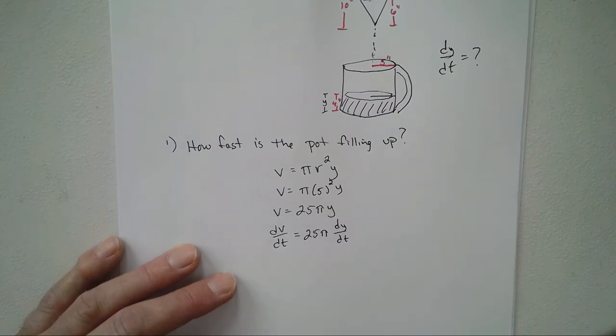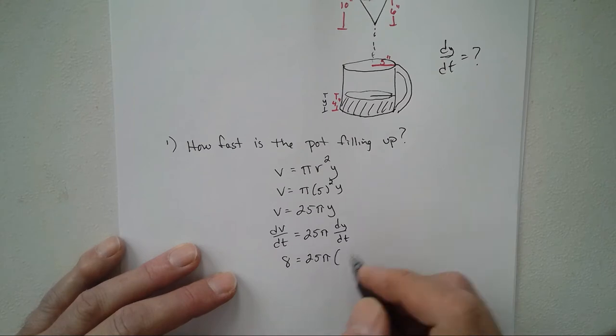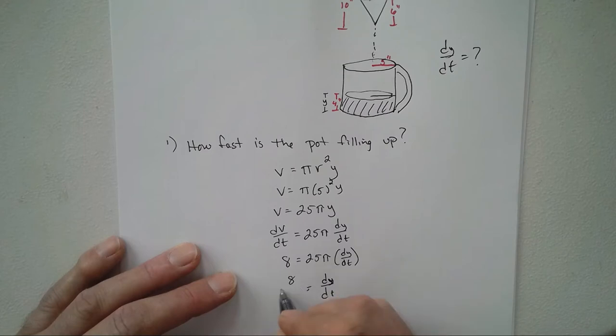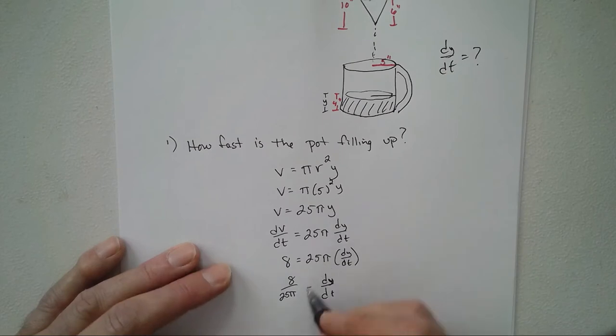dV/dt is given, that's 8. dy/dt, well that's what we're looking for. dy/dt equals 8 over 25π. It's a change in height, so that would be inches per minute.